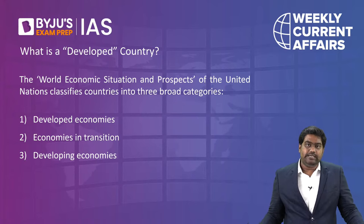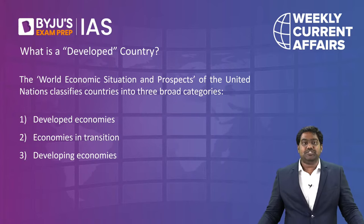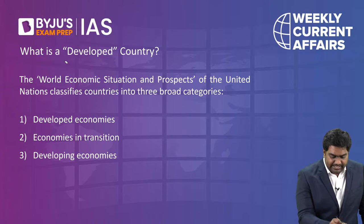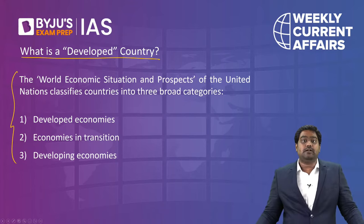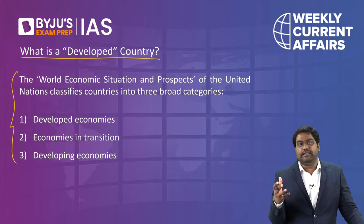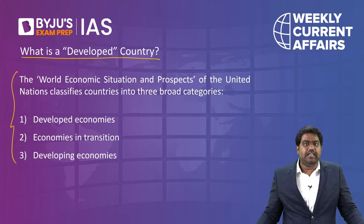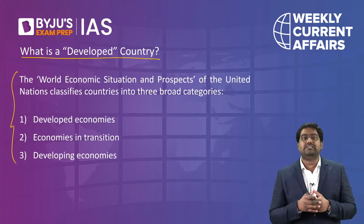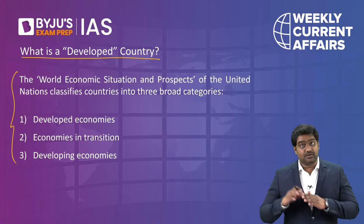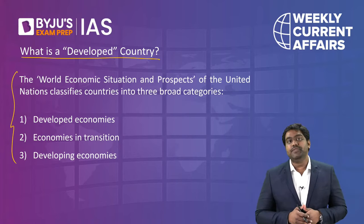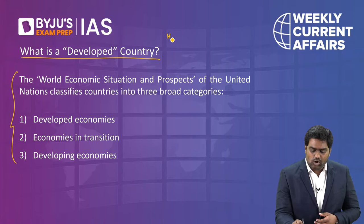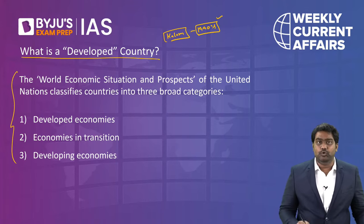This brings us to the topic of Developed India by 2047. The key questions are: what is a developed country, how do you classify a nation, and on what basis are countries categorized as developed, developing, or underdeveloped? We also need to evaluate where India stands today and what the way forward is. This call by the PM is in many ways a reminder of a similar call given back in the 1990s by former President APJ Abdul Kalam.